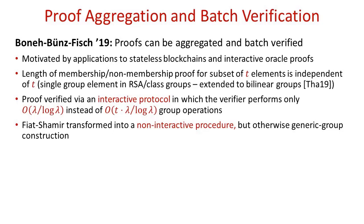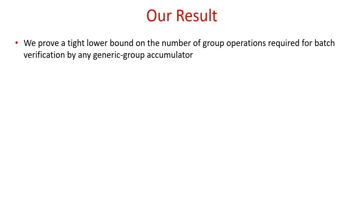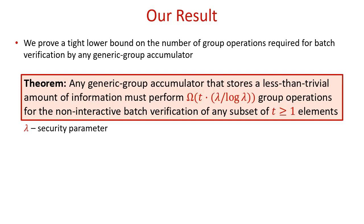Given the key importance of non-interactive verification in most applications that involve accumulators, this leads us to the fundamental question of whether non-trivial batch verification in generic group accumulators indeed requires interaction. We prove a tight lower bound on the number of group operations performed during batch verification by any generic group accumulator. Stating our result somewhat informally, we prove that any generic group accumulator that stores a less than trivial amount of information must perform T times λ/log λ group operations for the non-interactive batch verification of any subset of T elements.